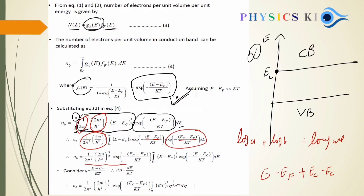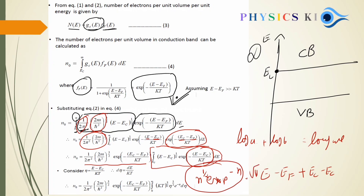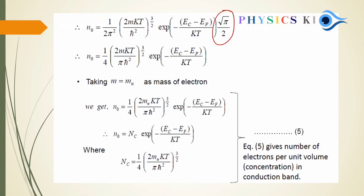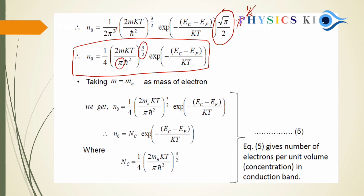To evaluate the integral, substitute η = (E − EC)/KT to form a gamma function. The integral becomes ∫e^(−η) × η^(1/2) dη, which equals √π/2. Simplifying: π² × √π = π^(3/2). Replacing M with the effective mass of electron M_n gives the final expression.